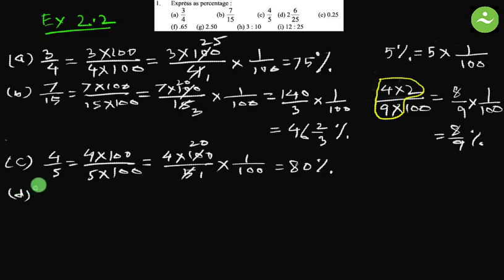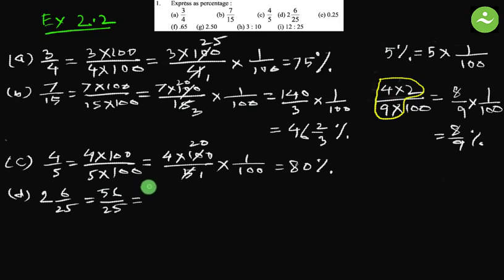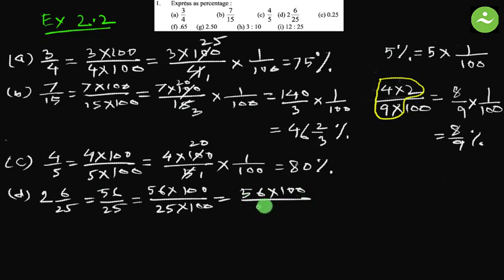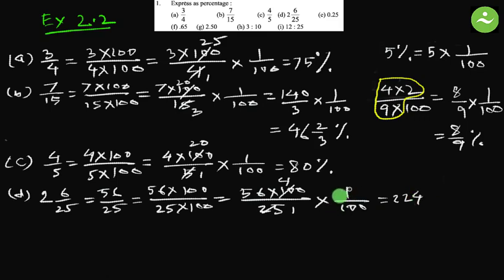Part d: 2 and 6 by 25. Convert to improper fraction: 2 times 25 plus 6 equals 56, so it is 56 by 25. Multiply both by 100: 56 multiplied by 100 over 25 multiplied by 100. Separate 1 by 100: 56 times 100 by 25, multiplied by 1 by 100. Simplify — divide by 25: 100 divided by 25 is 4. So 56 times 4 is 224. The answer is 224 percent.